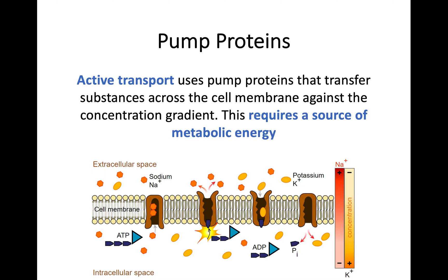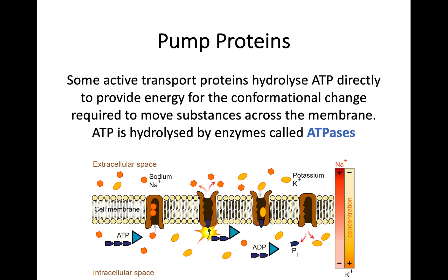Finally, we're going to quickly look at pump proteins. Pump proteins, which you came across in Higher Biology, use active transport — meaning they use energy and move molecules up a concentration gradient from a lower to a higher concentration. These pump proteins transfer substances across the cell membrane but require a source of metabolic energy. Some of these active transport pump proteins hydrolyze ATP directly to provide energy to change conformation and pump molecules from one end to the other. They use enzymes called ATPases that hydrolyze ATP to provide that source of energy for the pump protein to work. ATPases — quite easy to remember: if it ends in -ase, it's an enzyme.